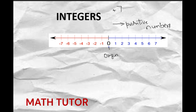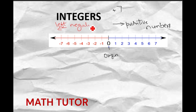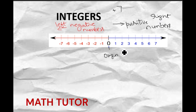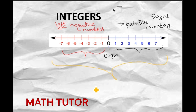On the left side of the number line we have minus 1, minus 2, minus 3, minus 4, and so on. These are called negative numbers. So if you go from 0, the origin, to the right side of the number line we have positive numbers, and to the left side of the number line we have negative numbers. All these numbers together we call integers.